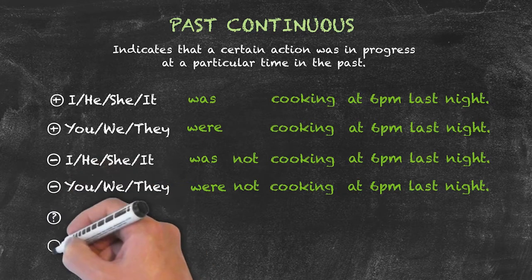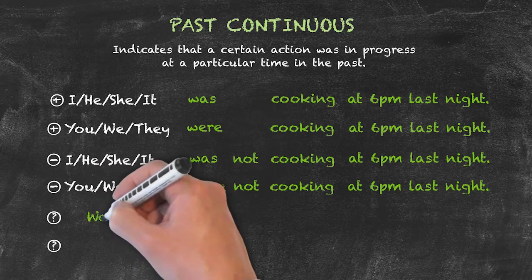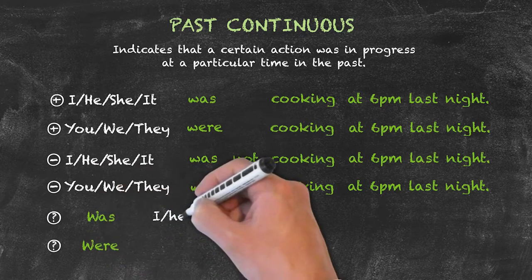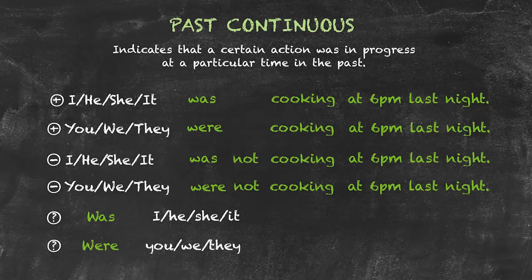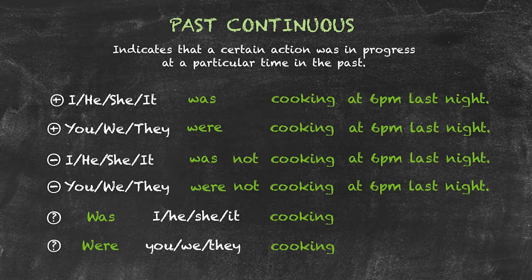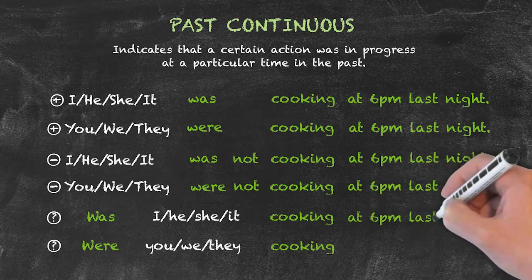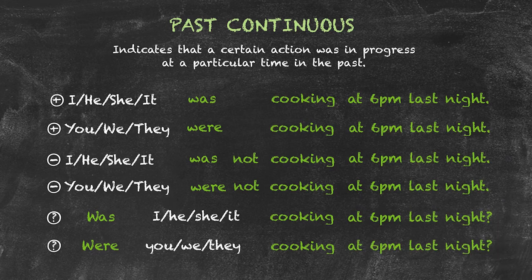In order to form the question form of the past continuous tense, again we're going to invert the subject and the auxiliary verb. So we start our question with 'was' or 'were', depending on our subject, and we keep our present participle form of the verb as our main verb in the question. So: was he cooking last night, or were you cooking last night?